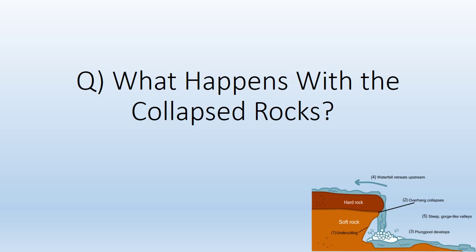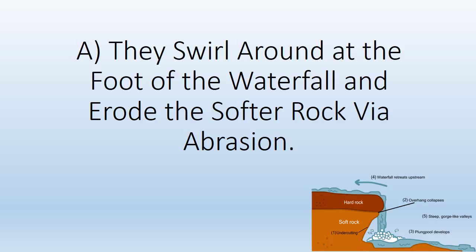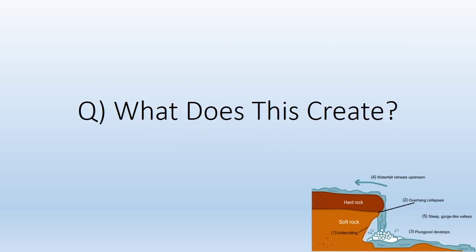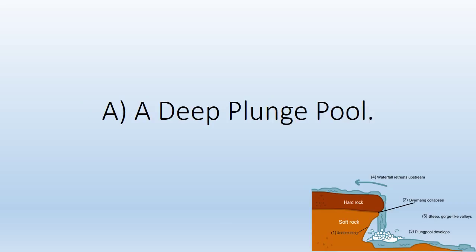What happens with the collapsed rocks? They swirl around at the foot of the waterfall and erode the soft rock via abrasion, creating a deep plunge pool.